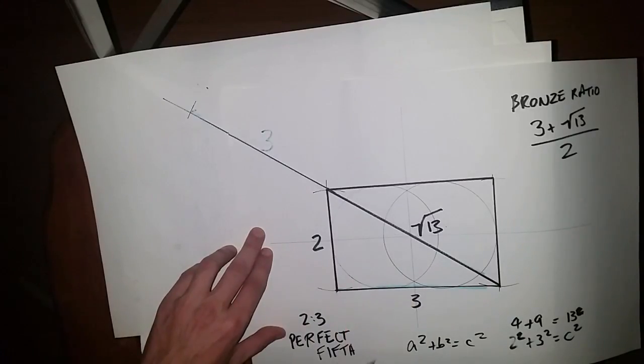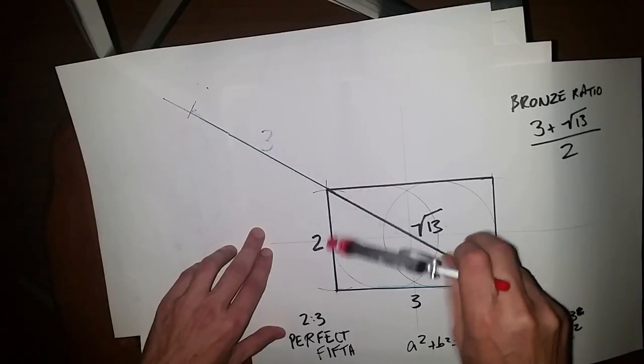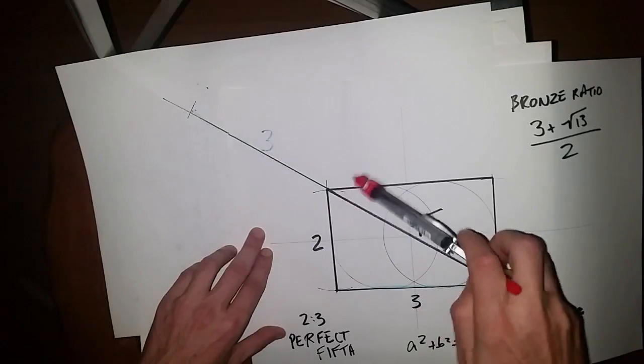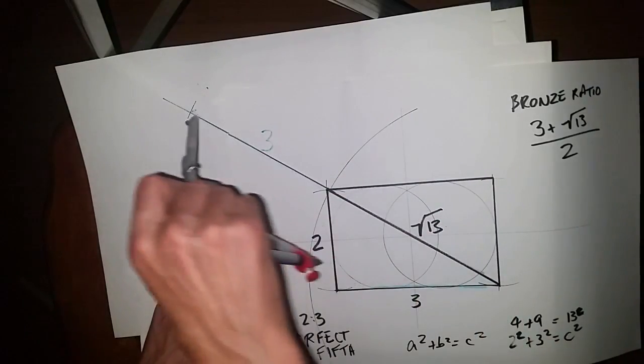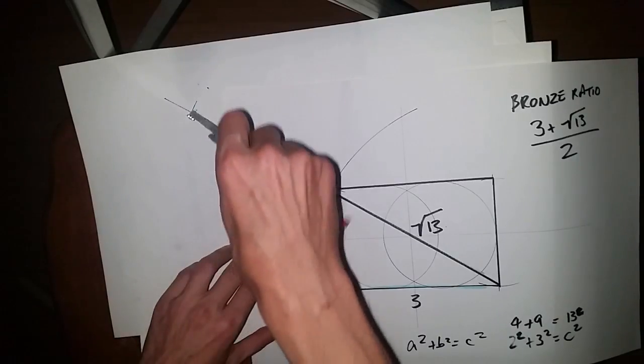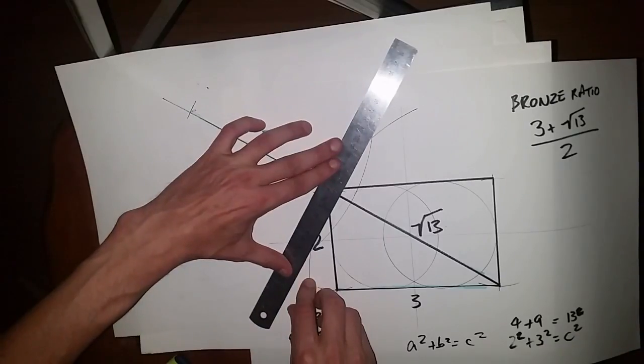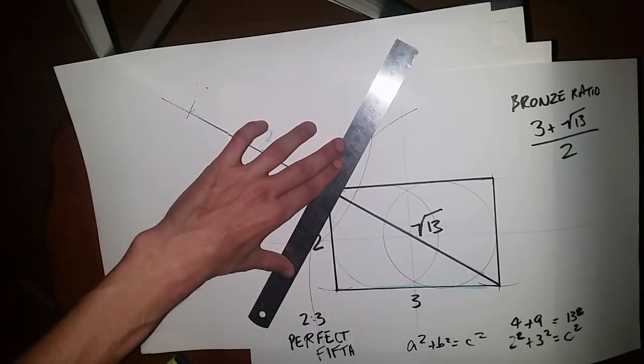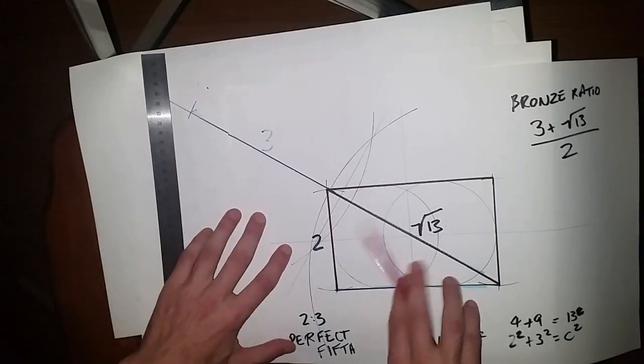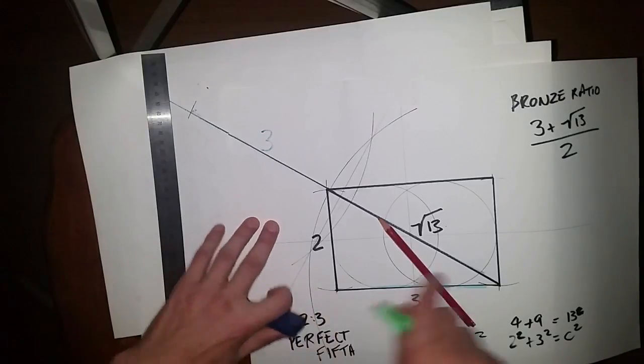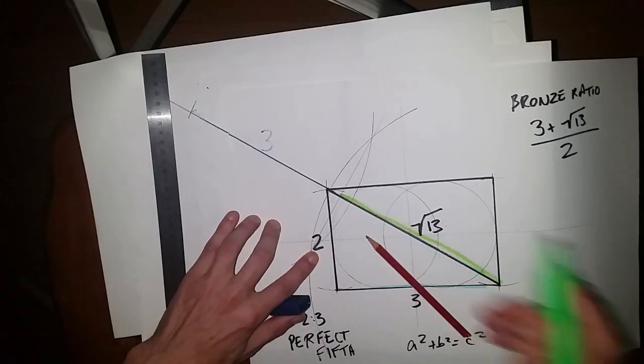And again, now we can, as long as we set the compass over halfway, we can bisect the line. And therefore, this is the bronze ratio there.